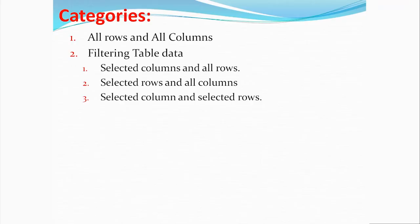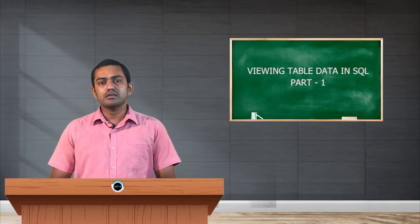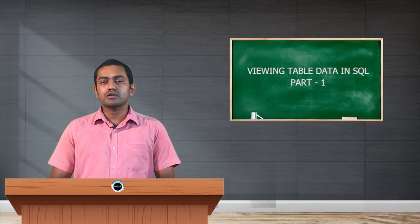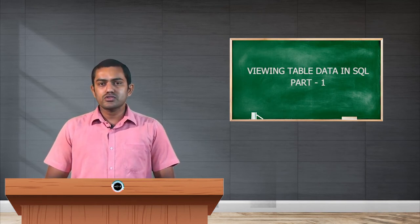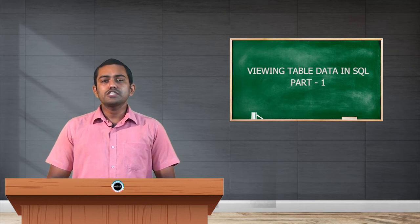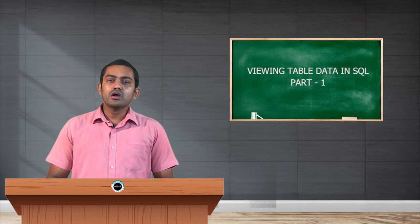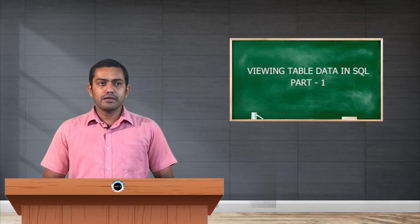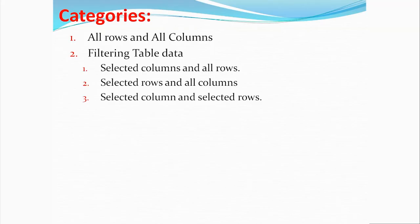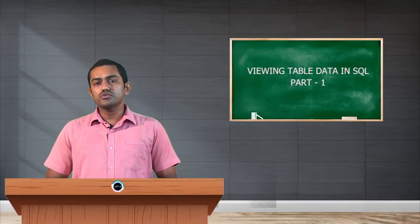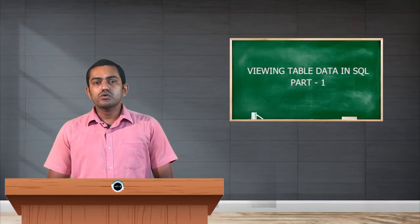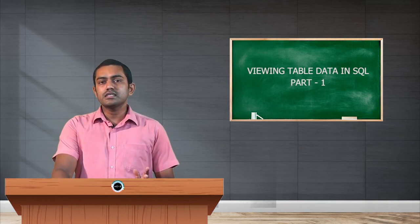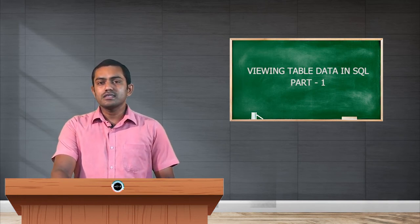The second option under filtering is selected rows and all columns — we don't want entire rows from the table; depending on some conditions, we display records but need all columns. The third option is selected columns and selected rows — here we choose which columns and which rows to display. We will discuss these types in detail.